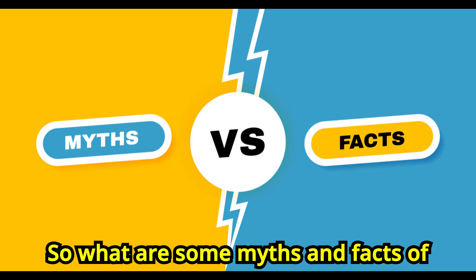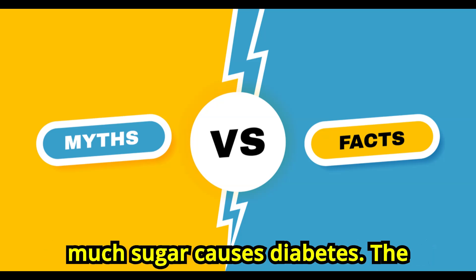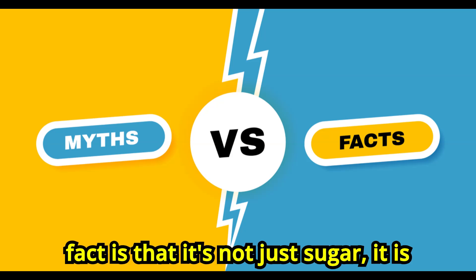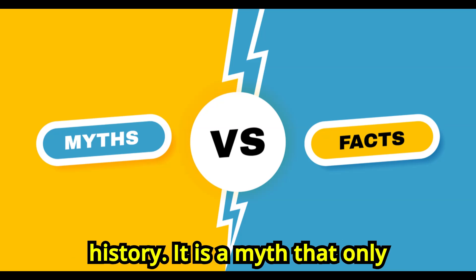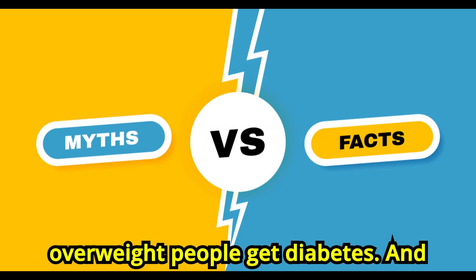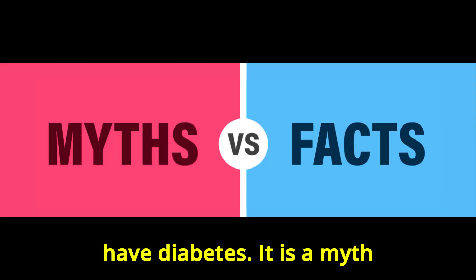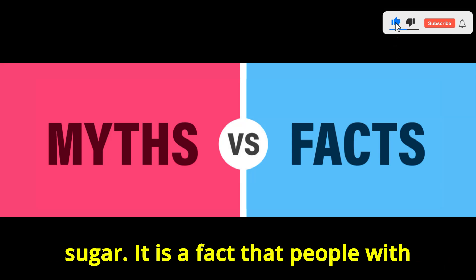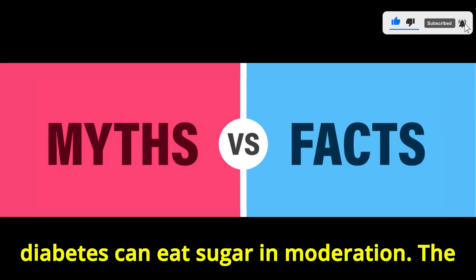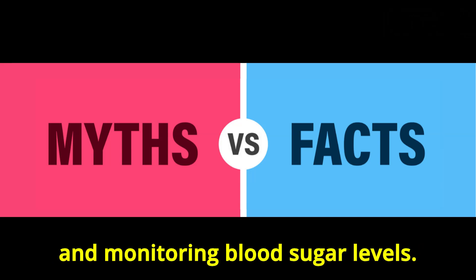So what are some myths and facts about diabetes? It is a myth that eating too much sugar causes diabetes — the fact is that it's not just sugar, it is your overall lifestyle and family history. It is a myth that only overweight people get diabetes — the fact is that even thin people can have diabetes. It is a myth that people with diabetes cannot eat any sugar — the fact is that people with diabetes can eat sugar in moderation, with the key being to balance it with a healthy diet and monitoring blood sugar levels.